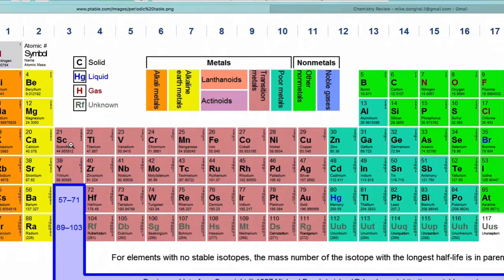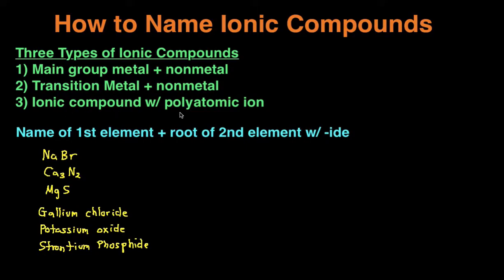Transition metals are the metals in the middle — the ones that don't go all the way up to the top. Transition metals are different from main group metals because transition metals can have multiple charges. And then lastly, you can have the ionic compound of a polyatomic ion. For this video, I'm just going to be focusing on the first type: how to name ionic compounds when you have a main group metal with a non-metal. The rules are: you name the first element, and then with the second element, you take the root and add -ide to the end of it.